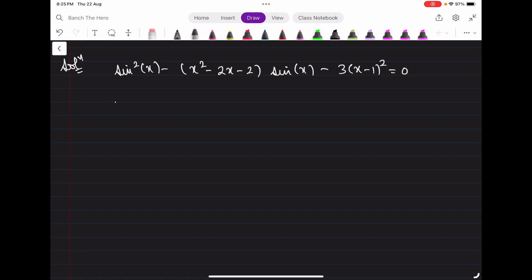We can write this equation as sin²x minus, if you want to club these terms, it will be (x - 1)² because this is x². If we are adding and subtracting 1 here, we can make (x - 1)² - 3, times sin(x) - 3 into (x - 1)² = 0.